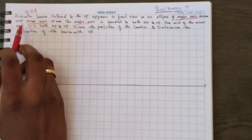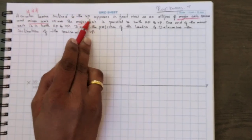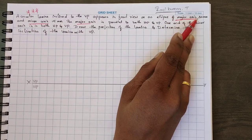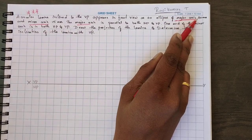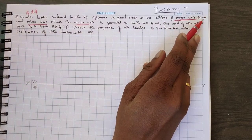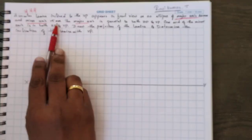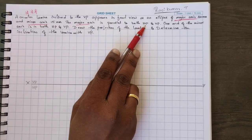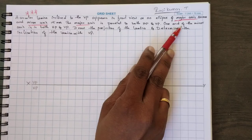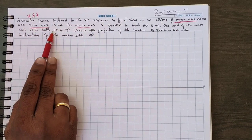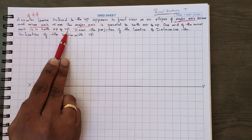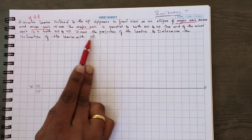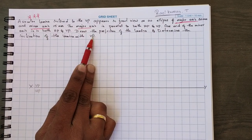Read the problem carefully. Circular lamina inclined to VP appears in the front view as an ellipse of major axis. There is one major axis diameter 30mm and minor axis is 15mm. The major axis is parallel to both HP and VP. One end of the minor axis is in both HP and VP. Draw the projection of the lamina and determine the inclination of the lamina with VP.